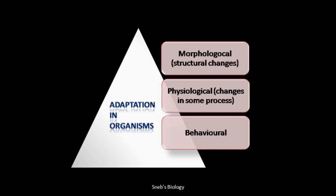Adaptation can be morphological — meaning there are structural changes which help the organism to survive. Second, adaptation can be physiological — meaning there can be some process or physiological change which helps the organism survive. Third, it can be behavioral — the behavior of the organism might change whenever conditions change. We will take some examples to understand how these adaptations help cope with abiotic conditions.